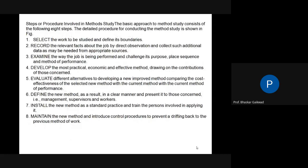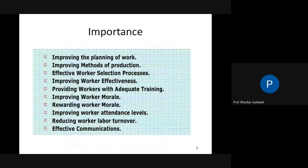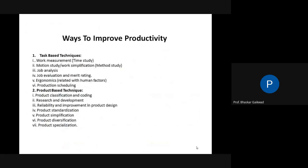Steps or procedures in method study: the basic approach consists of 8 steps. First — selection of work. Second — recording. Then examination, develop new method, evaluate, define (set the new method), install, and maintain. These same steps apply to work study and method study. The process is: select → record → examine → develop → evaluate → define → install → maintain, and the cycle continues.